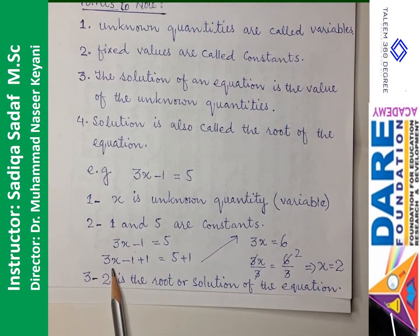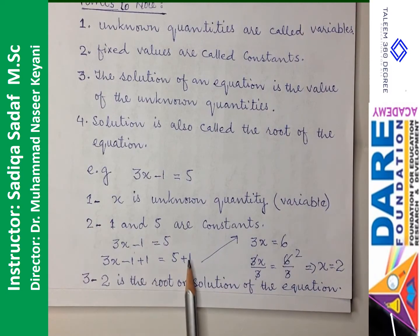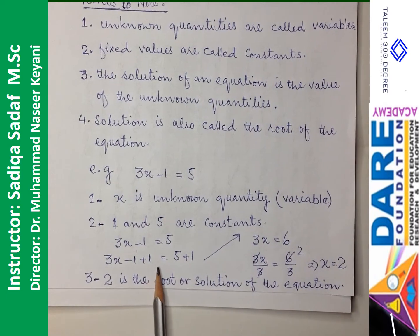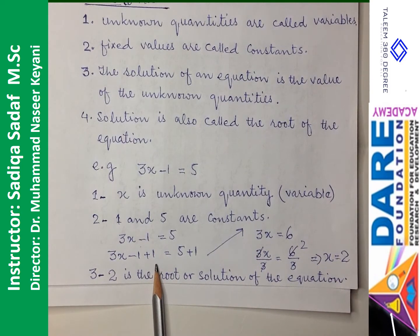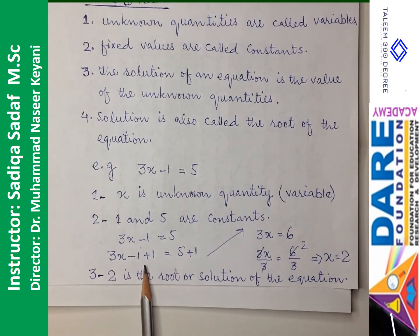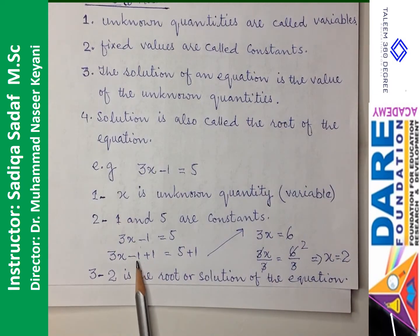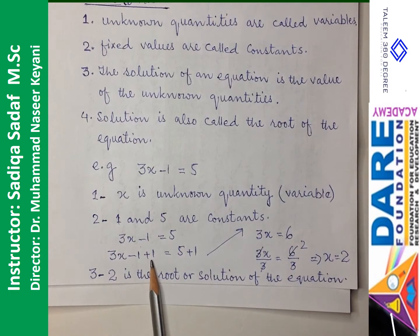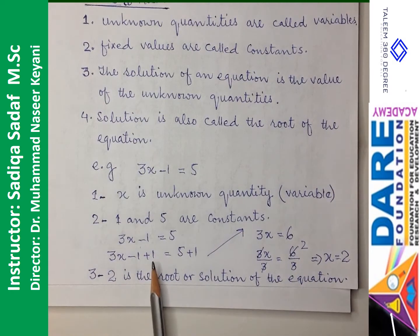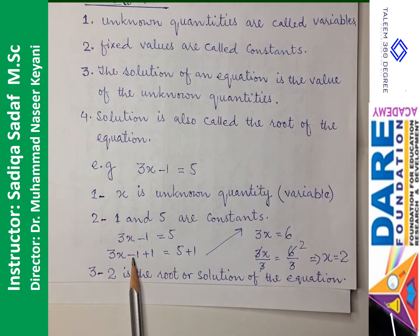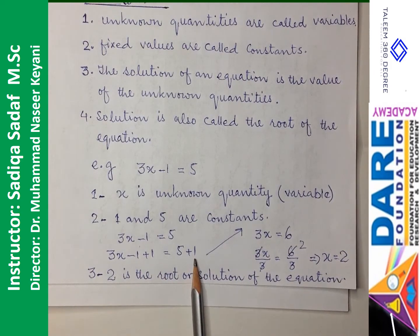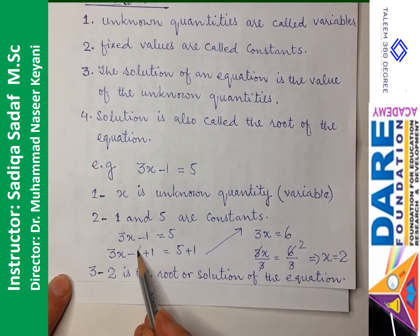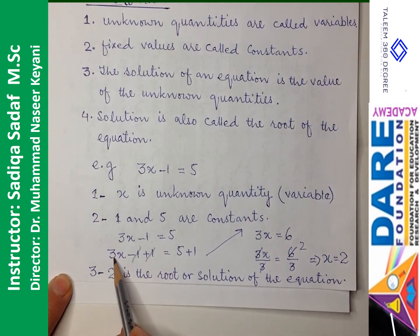Chunki humne X ki value find karni hai, to minus 1 ke saath plus 1 add karte hain, aur is side par bhi plus 1. Chunki yeh equal sign hai, to hum jab bhi jo amal bhi kisi ek side par karenge, wahi amal doosri side par bhi karna hoga. Minus 1 aur plus 1 aapas mein cancel ho jaate hain, aur 3x is equal to 5 plus 1, which is equal to 6.